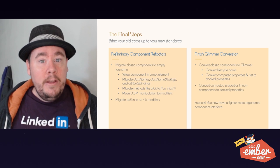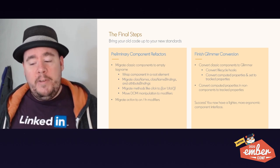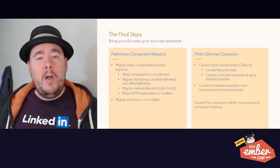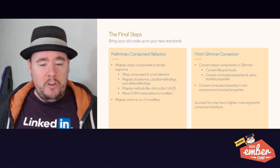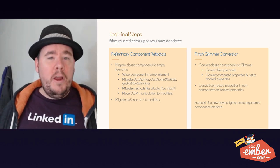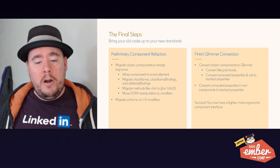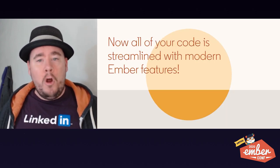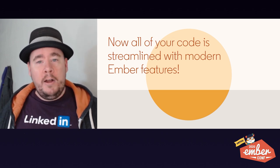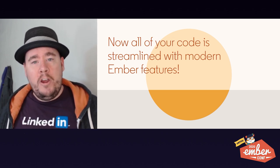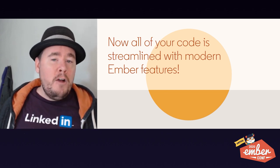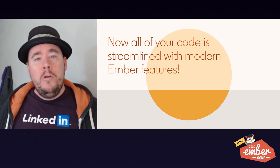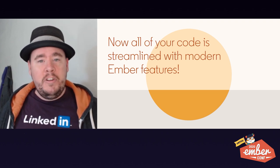The final thing you're going to want to do is actually finish your Glimmer conversion. Now that you've prepared your classic components to be converted, you're going to go through and start converting lifecycle hooks from classic to Glimmer, and convert your computed properties and .set calls to use tracked properties. You're also going to want to do this in your non-components such as routes, models, controllers, etc., by finding any computed properties you have and converting them to tracked properties as well. At this point, you're done. You've adopted this lighter, more ergonomic component interface and streamlined the way you write your Ember applications.